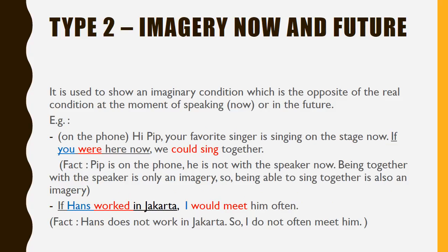Type 2: Imaginary Now and Future. It is used to show an imaginary condition which is the opposite of the real condition at the moment of speaking. For example: 'If you were here now, we could sing together' — the fact is the person is on the phone and not present, so singing together is only imaginary. Another example: 'If Hans worked in Jakarta, I would meet him often' — the fact is Hans does not work in Jakarta.